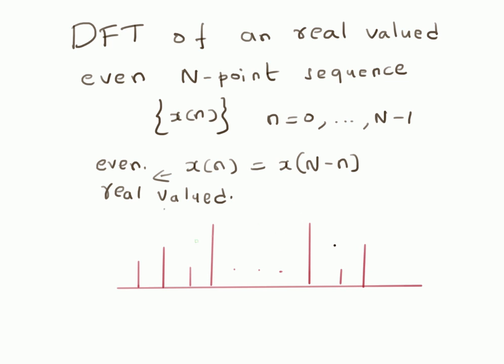An even function that has real values might look like this: this is the n-axis, n starts from 0 and the last value is N-1. The value at n=1 equals x(N-1), and x(2) equals x(N-2), and so on. This is even symmetry — this is an even-valued sequence. Now we want to find out the DFT of such a sequence.